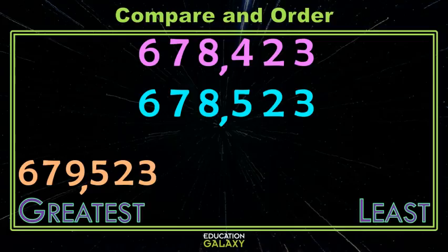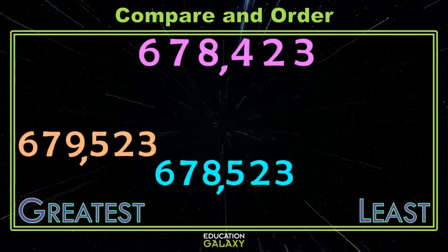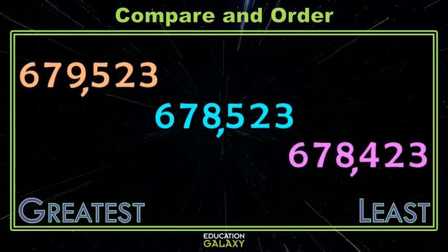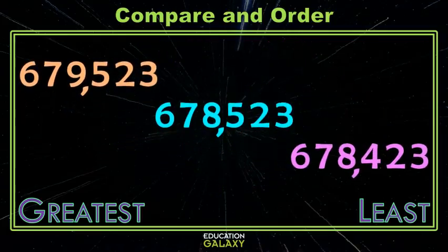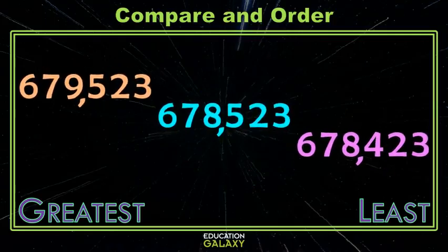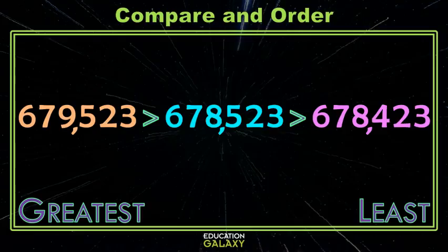Now we just want to compare these last two. I know that the six, the seven, and the eight are all the same, so now I'm in the hundreds place comparing the four and the five. The five is larger, which makes 678,523 the next number in my greatest-to-least lineup, which puts 678,423 as least. If I want to write this as a comparative statement, I'll need to put in my greater than symbols.